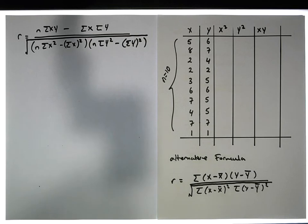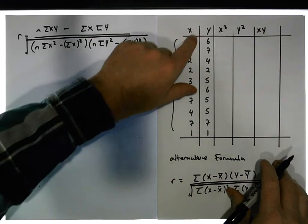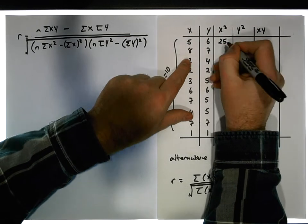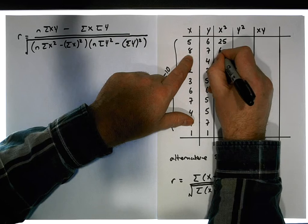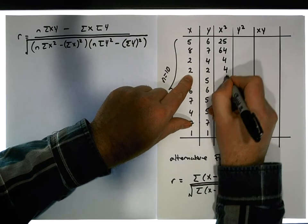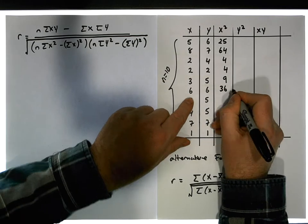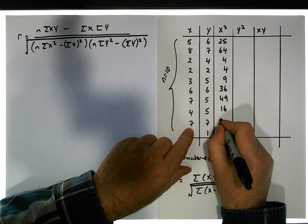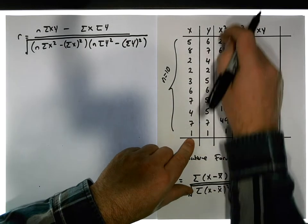That gives us the correlation coefficient. So I need to actually calculate this, going down through the values. Five squared is 25. Eight squared is 64. Two squared is 4. Two squared is 4. Three squared is 9. Six squared is 36. Seven squared is 49. Four squared is 16. Seven squared is 49. And one squared is 1. So we have the x squared values.